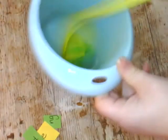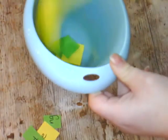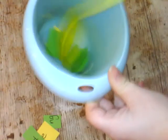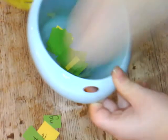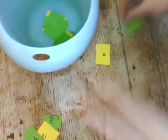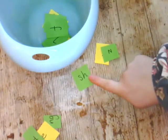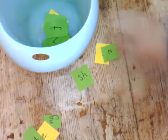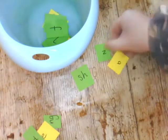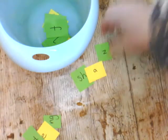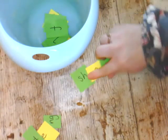Silly soup, silly soup. What have I got in my silly soup? Oh, I've got a yellow one there. I've got a yellow, a green, so I need one more green. Okay, so this time we've got the sound sh, a, and z.